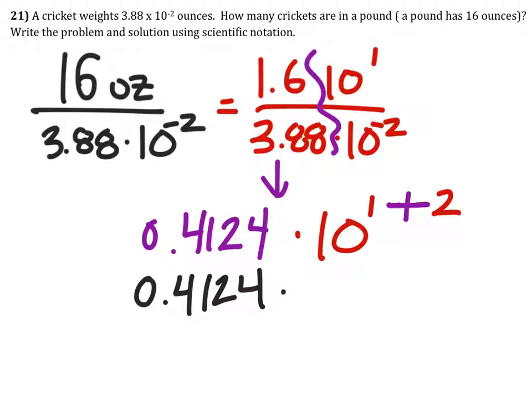0.4124 times 10 to the power of 3, but the decimal is in the wrong place. We need to move it right here. So that would be 4.124, but when we move it to the right one like this, we need to subtract 1 from the powers. So we got 10 to the power of 2.